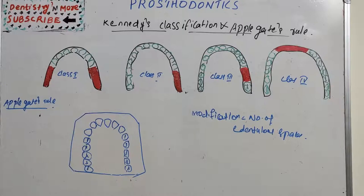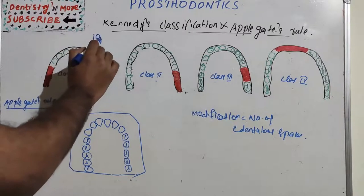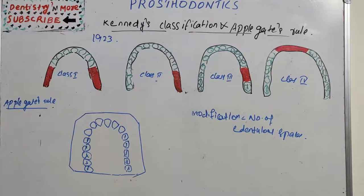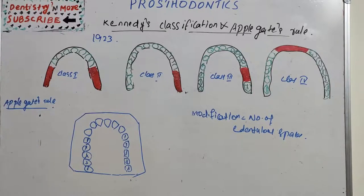He proposed this classification in 1923. It gives a positional picture of the teeth present but little information on the exact number of teeth absent or present. He basically pointed out the edentulous space numbers, not the number of teeth absent or present.